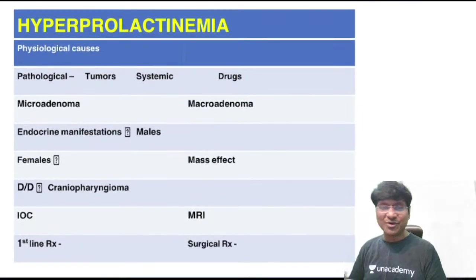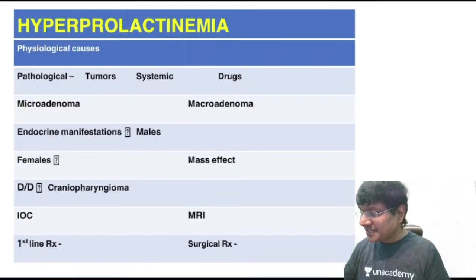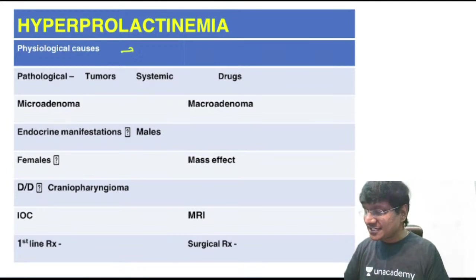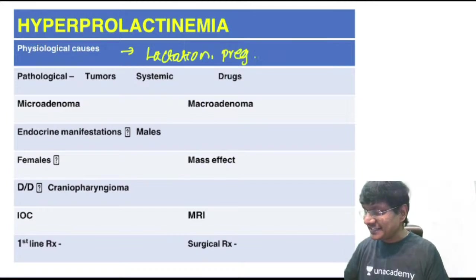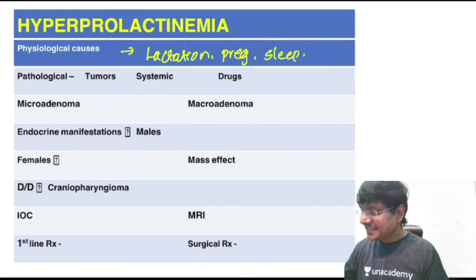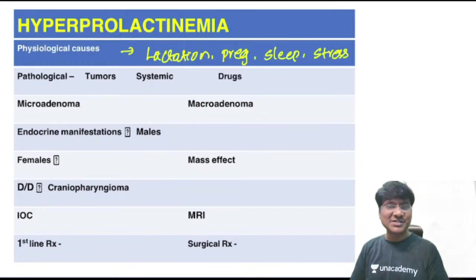Now let's discuss hyperprolactinemia. Physiological causes include lactation, pregnancy, sleep, and stress. These are the physiological causes for hyperprolactinemia.